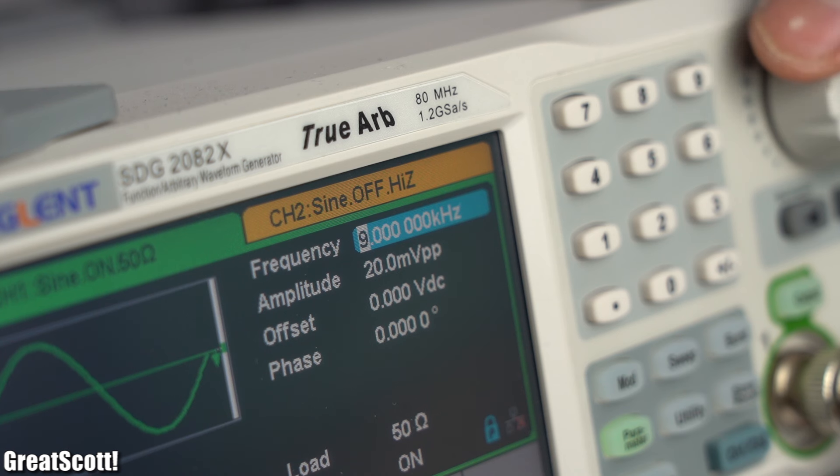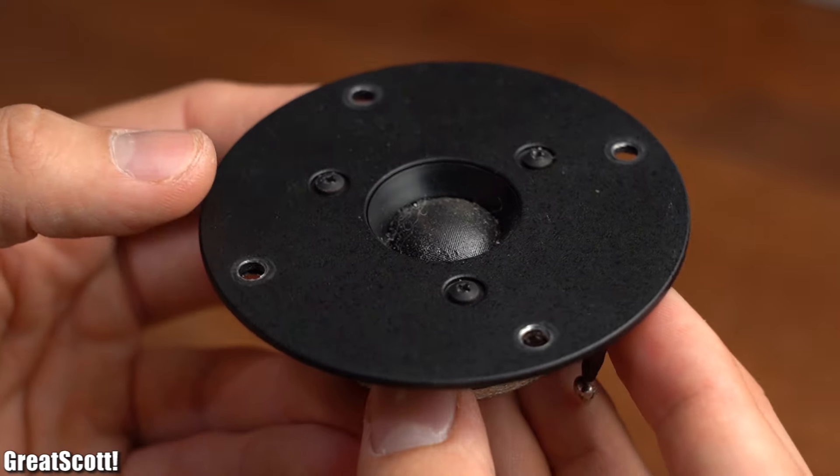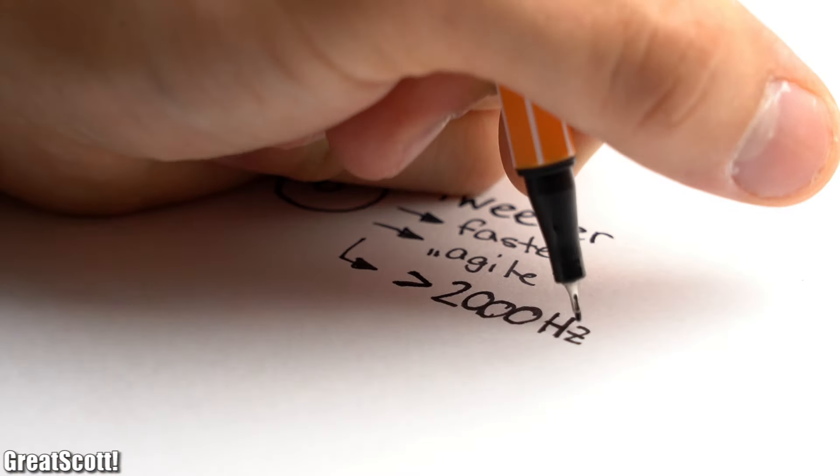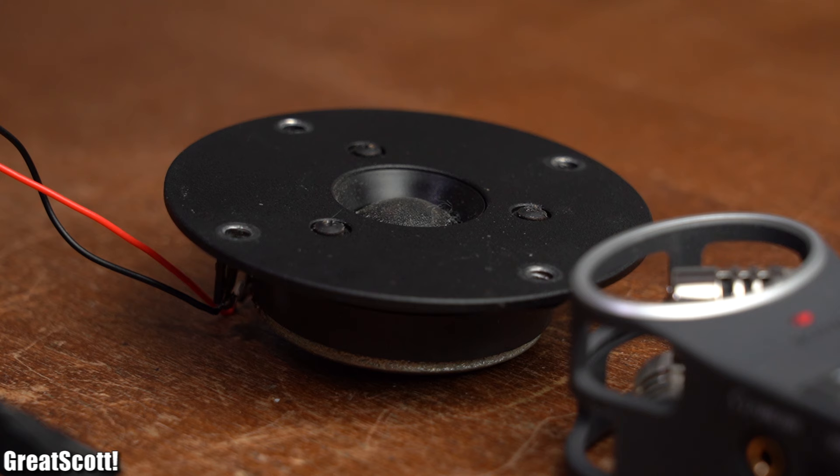Of course it can also play higher frequencies, but volume and quality reductions can be the consequences. That is where the small and agile tweeter comes in, which can play back frequencies above 2,000 Hertz without reduced volume or quality.